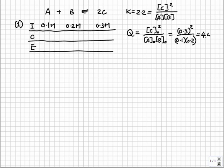By comparing Q against K, we can determine which direction the reaction will go in order to reach equilibrium. If Q is smaller than K, the reaction will move right. If Q is larger than K, the reaction will move left. If Q happens to be equal to K, then the reaction is already at equilibrium.